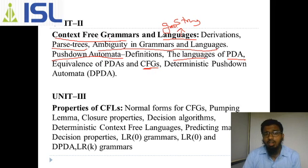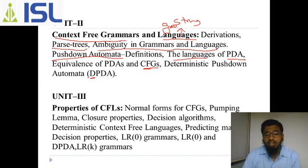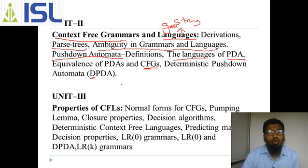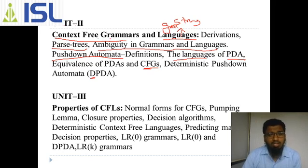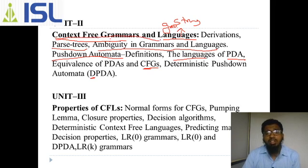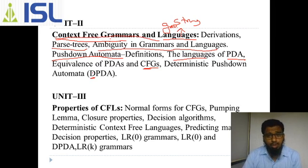We will see the equivalence of PDA and CFG — context-free grammar — and deterministic pushdown automata. If you learn unit two, then unit three is almost the same: if you know about CFG and languages, these two units will be easy for you for scoring.